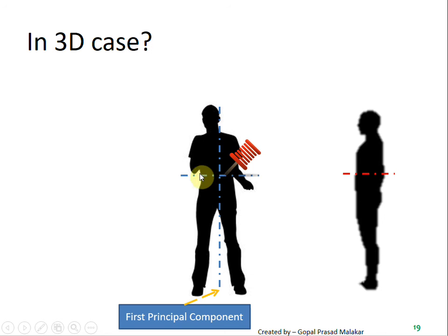Whereas if you start putting projections on this particular axis, the variance is going to be up to this point. And if you start putting projections on the line representing depth, the projection will be varying from here to here, this much variance.